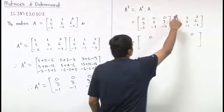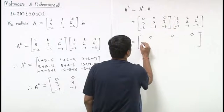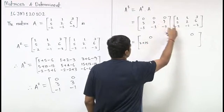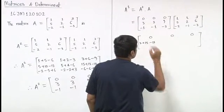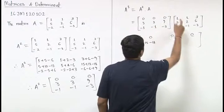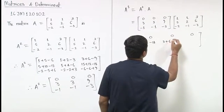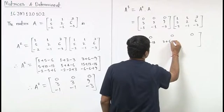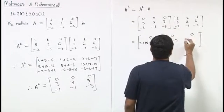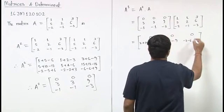R2 versus C1: 3×1 + 3×5 + 9×(-2) = 3 + 15 - 18 = 0. R2 versus C2: 3×1 + 3×2 + 9×(-1) = 3 + 6 - 9 = 0. R2 versus C3: 3×3 + 3×6 + 9×(-3) = 9 + 18 - 27 = 0.